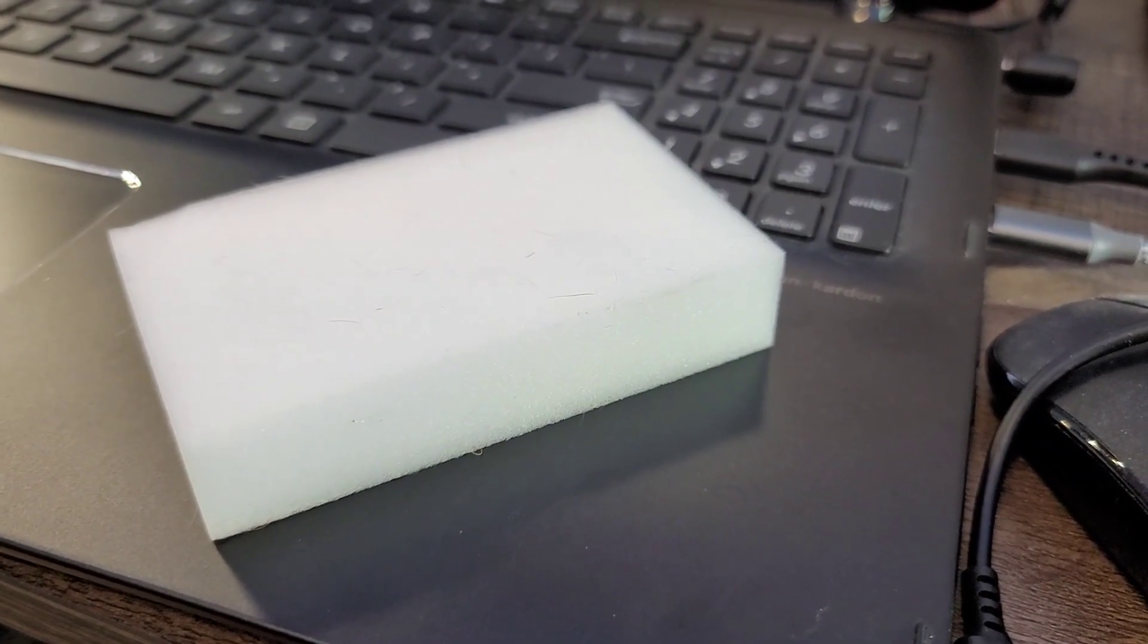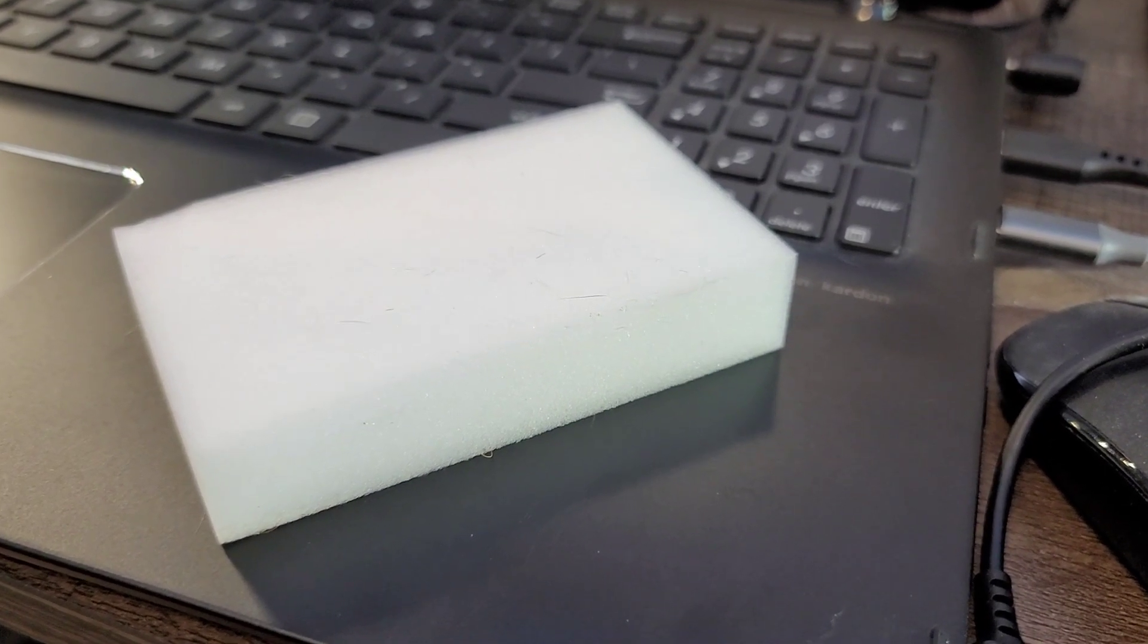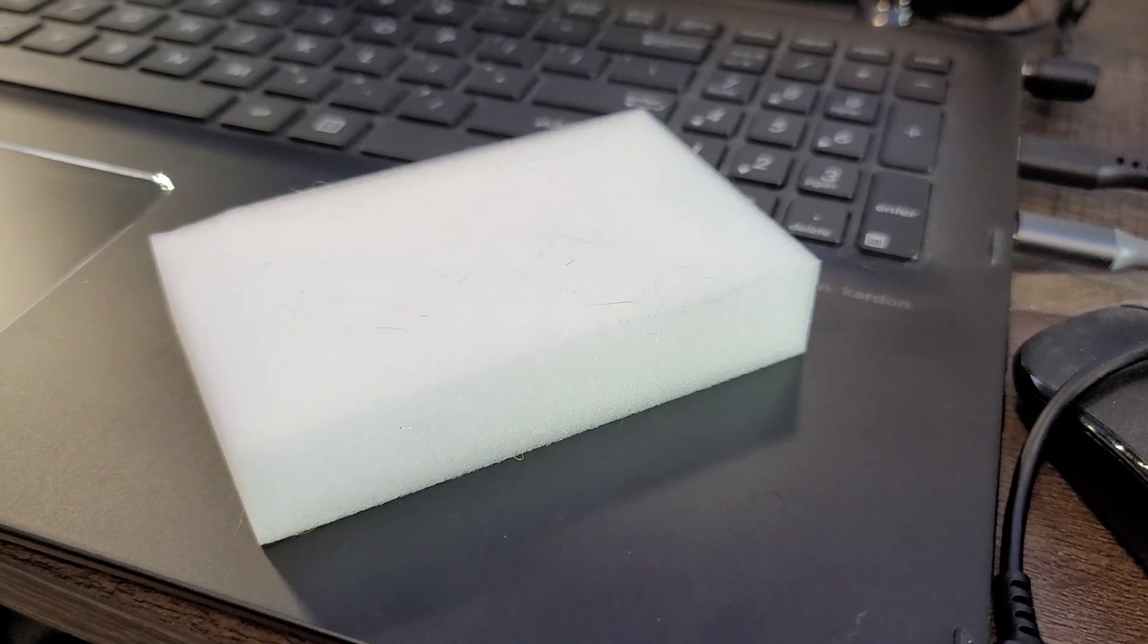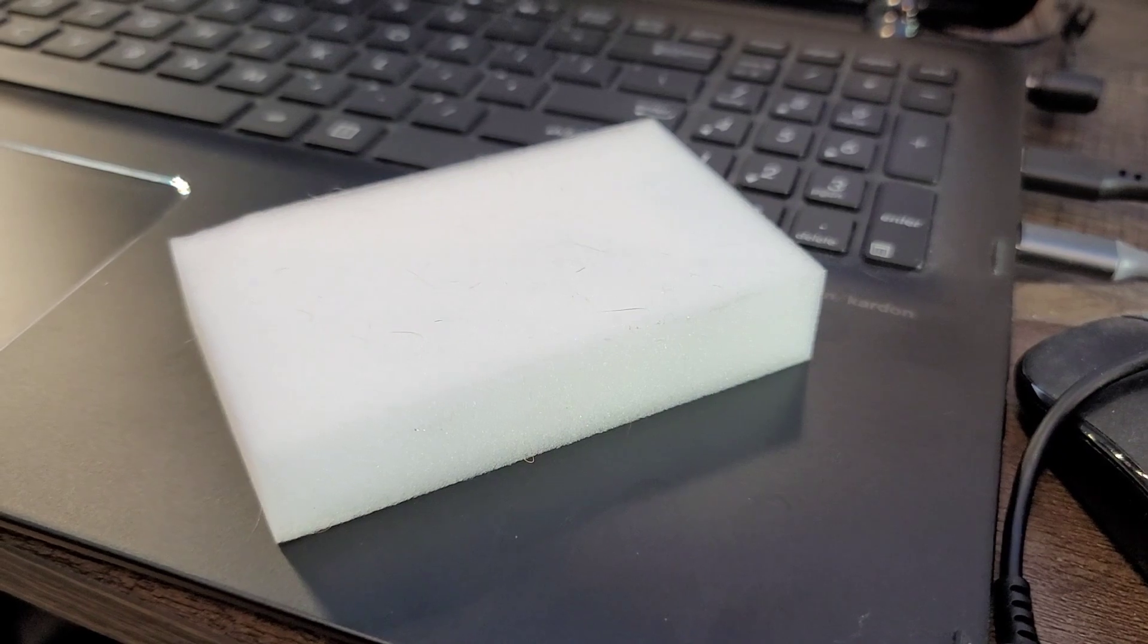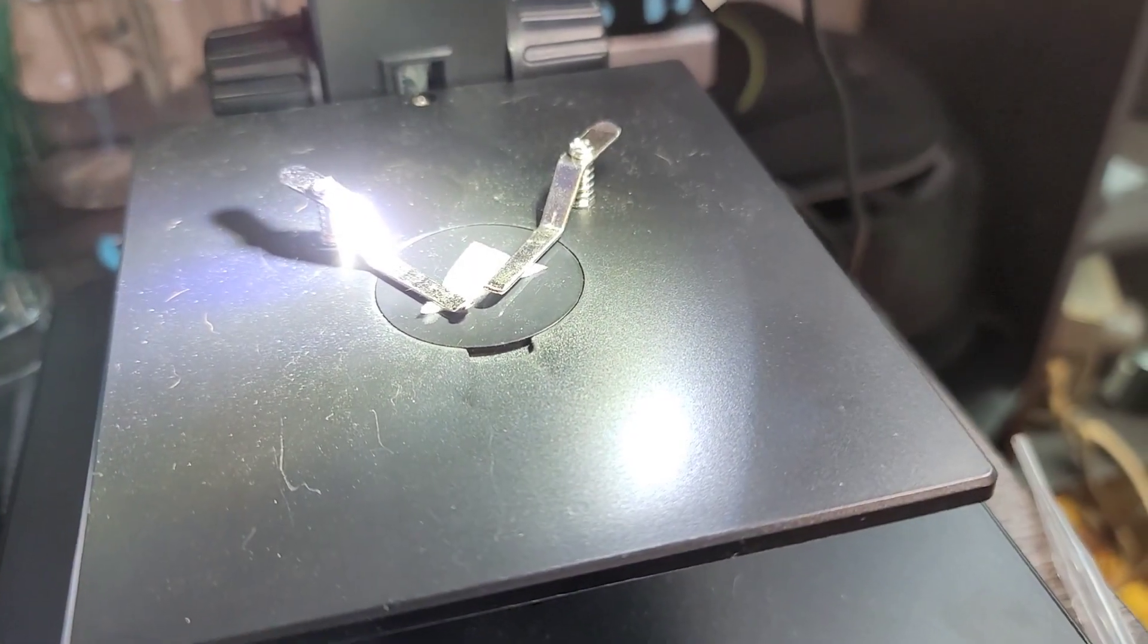We're going to take a quick look at a magic eraser under the microscope. It's also called melamine foam. I think I pronounced that right. Let's take a look at it under the microscope. So I cut a slice as thin as I could get it and we'll see how it looks.